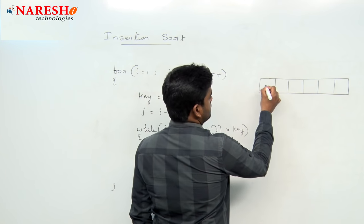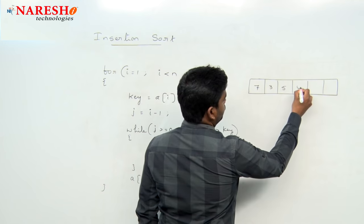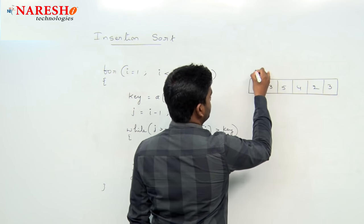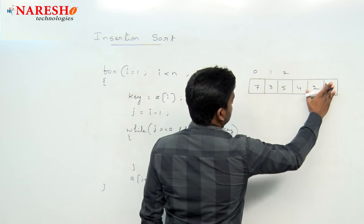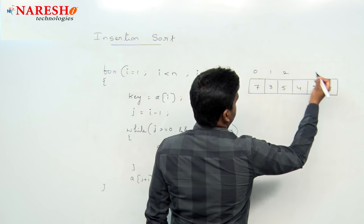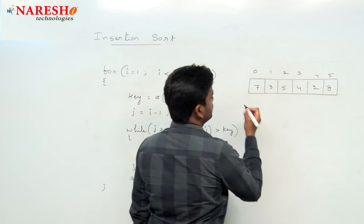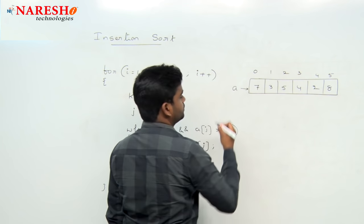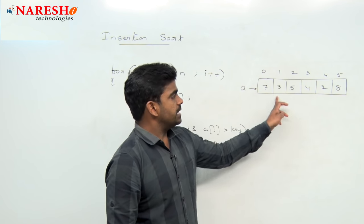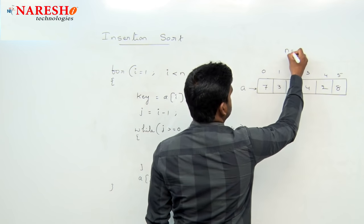The elements we are giving are something like 7, 3, 5, 4, 2, 8 — some elements we are giving. This is array A. And what is the size? The size is 6, so n value is 6.